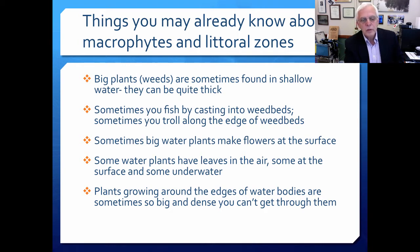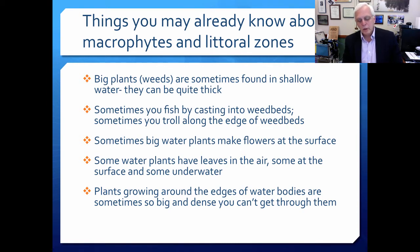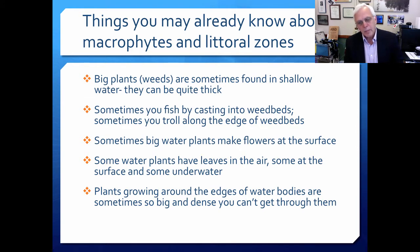Another thing you might have observed is that some water plants have leaves totally in the air and maybe their roots in the water. Some have their leaves at or on the surface, and some have their leaves underwater — those are three very important different types of aquatic macrophytes. Plants growing around the edges of water bodies are sometimes so big and dense you can't get through them. If you've been diving or snorkeling in weed beds, you've noticed that they can become very dense, and their productivity is quite important.